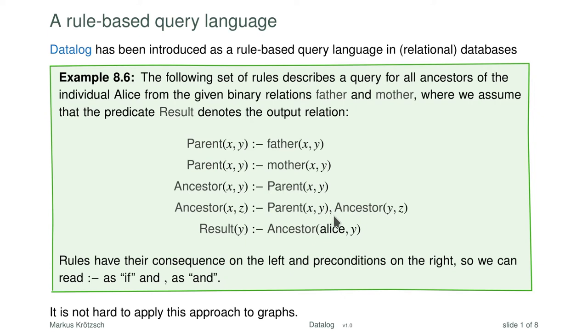The comma in this case is essentially the logical conjunction — the AND. So we want to find x, y, and z such that x has parent y AND y has ancestor z. The comma becomes the AND, the colon-minus becomes the arrow from right to left. As we will see, this is also not hard to apply to graphs. Here I have applied it to predicate logic facts — mother and father facts about some people in our database — and then derived recursively some results.